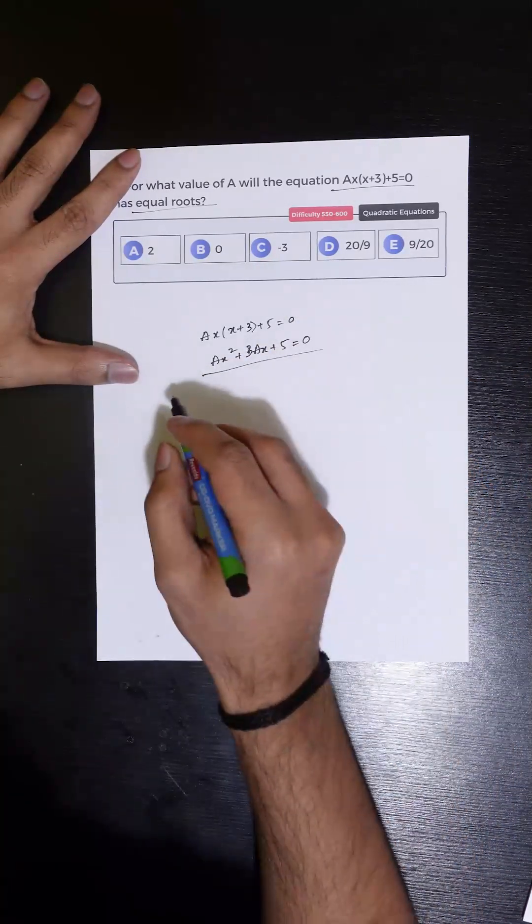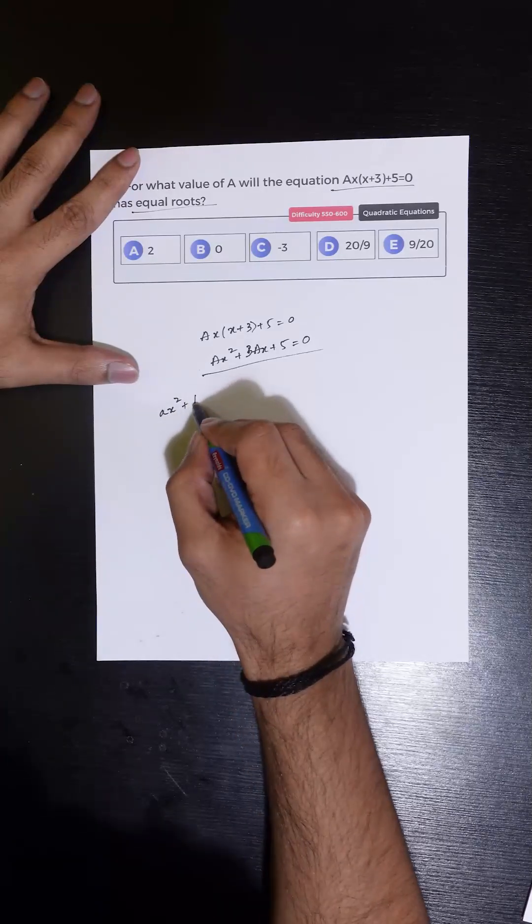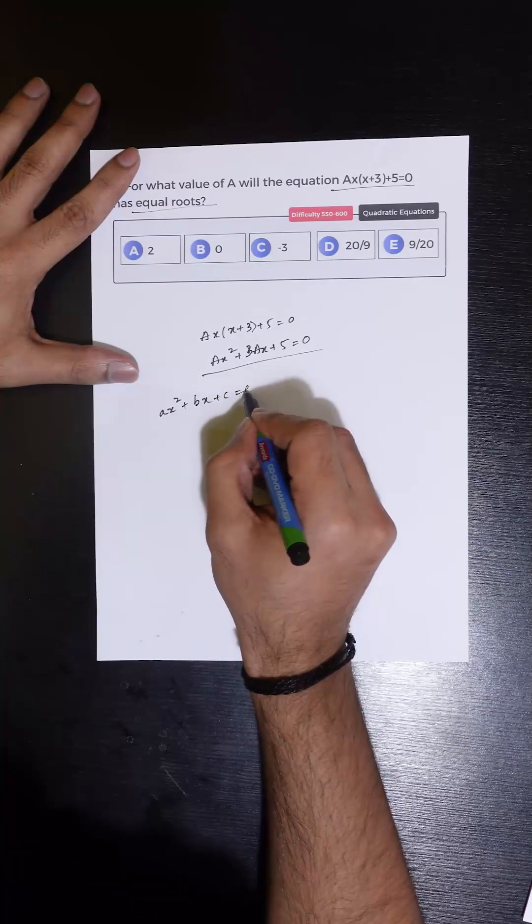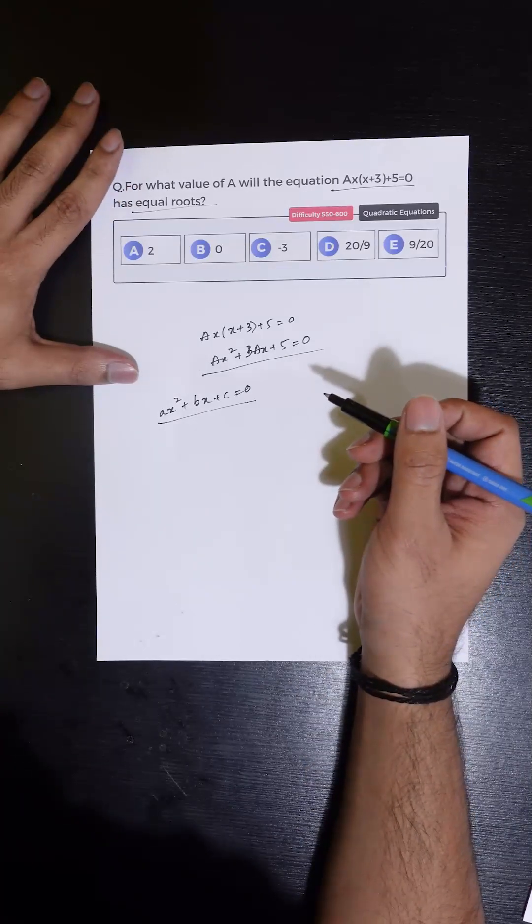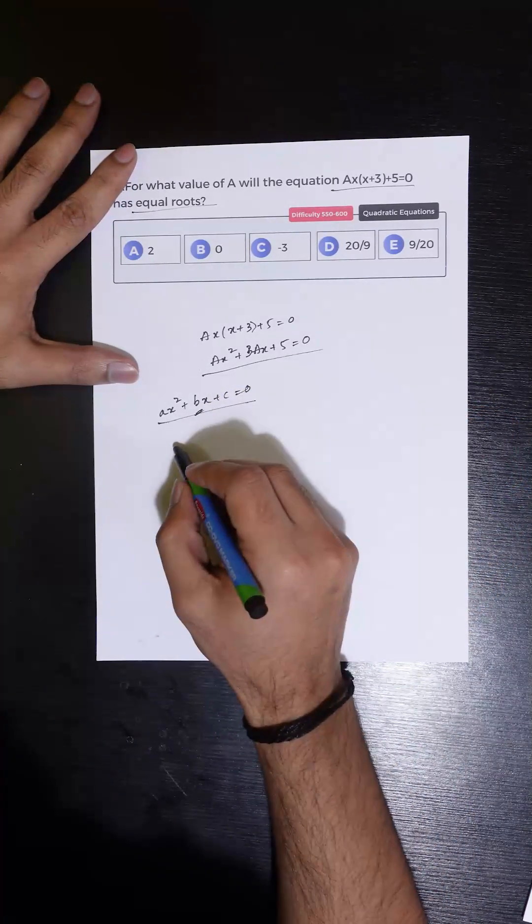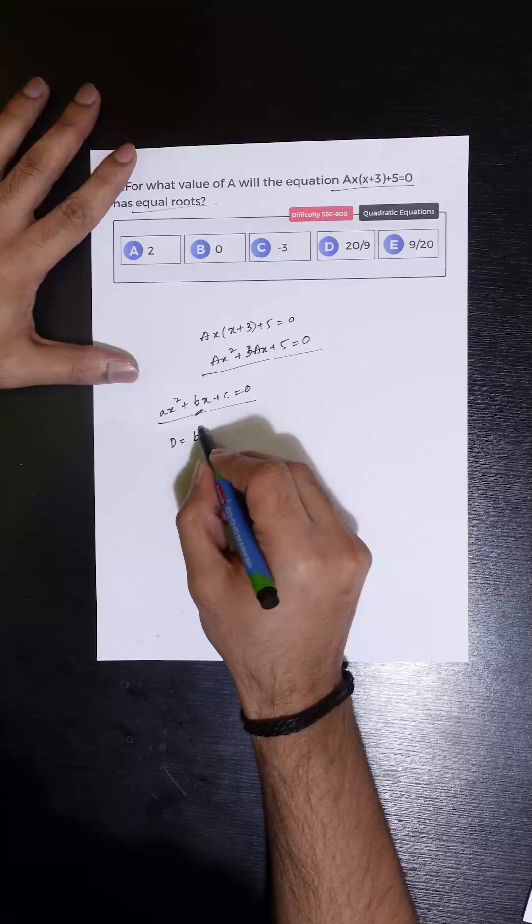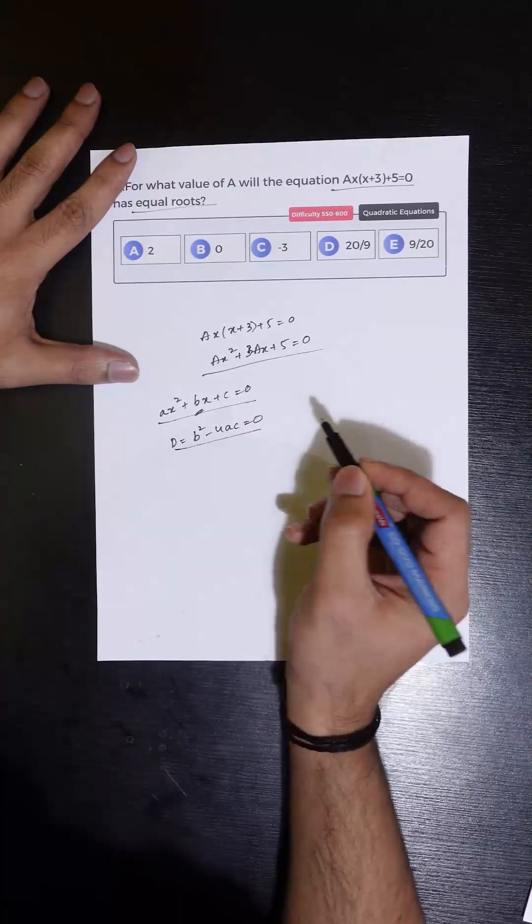If we take a look at this, this is a quadratic equation. When a quadratic equation is of the form Ax square plus Bx plus C is equal to 0, the roots of the equation are equal when the value of discriminant, which is B square minus 4AC, is equal to 0.